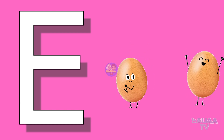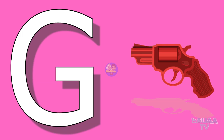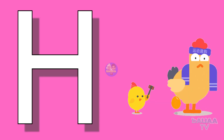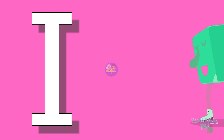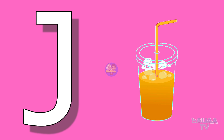E for egg, egg means undar. F for frog, frog means mandak. G for gun, gun means banduk. H for hen, hen means murgi. I for ice, ice means bar.